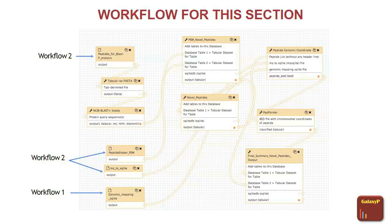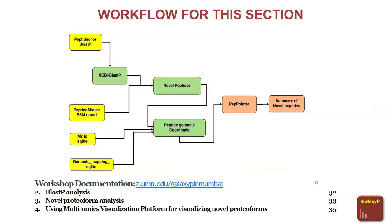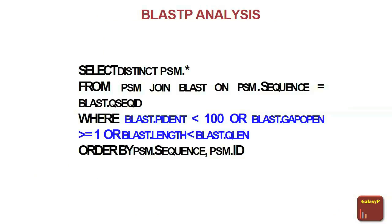There are two tools used here: peptide genomic coordinate and pep pointer. The BLAST-P peptide from workflow 2 is used here, along with the genomic mapping file from workflow 1. Using NCBI BLAST-P, we apply these rules: if BLAST-P identity is less than 100, or there is at least one gap present, or if the BLAST length is less than the query length, then it is called a novel peptide. These three criteria have been used on multiple datasets and seem sufficient to identify novel peptides.